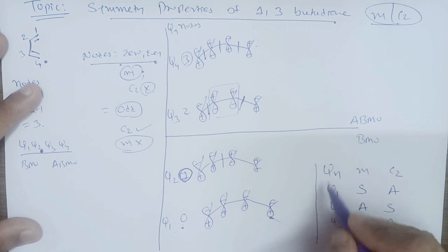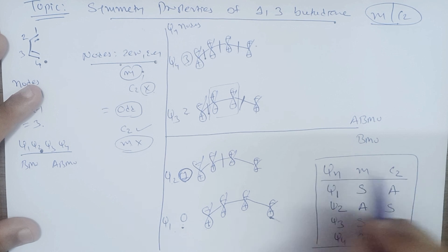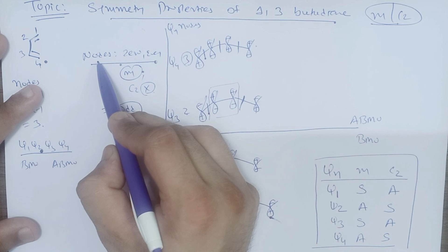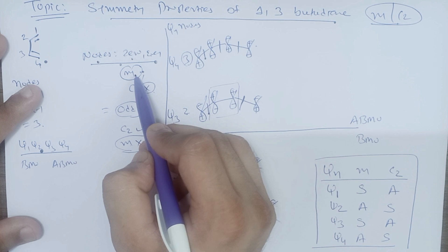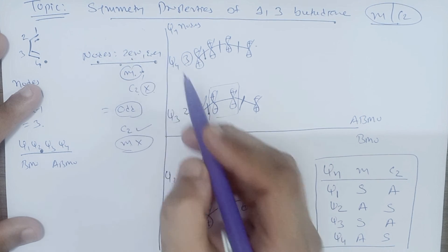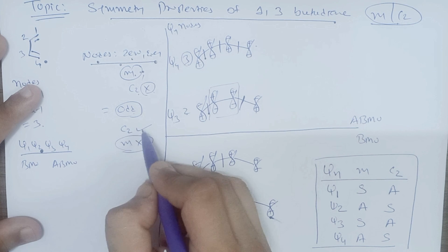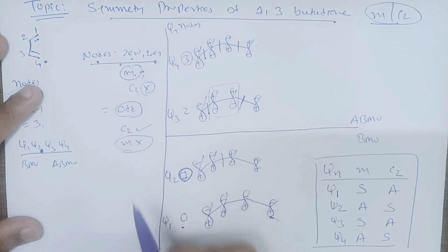This is the main selection rule: if the number of nodes is zero or even, the orbital must have a mirror plane and does not have a C2 axis. If the number of nodes is odd, it must have a C2 axis and does not have a mirror plane. Thank you.